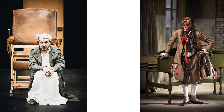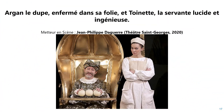Bérald est l'incarnation de l'honnête homme : juste, mesuré, sincère, équilibré. Alors qu'Argan est un fou, hypochondriaque, fanatique de la médecine, injuste avec sa fille, dupe et déséquilibré. L'un, Bérald, est raisonnable et rationnel, tandis que l'autre, Argan, est fou et irrationnel. On retrouve un autre couple antithétique avec le couple du maître et de la servante. Alors que le maître, Argan, est dupe et enfermé dans sa folie, Toinette, la servante, est ingénieuse et fait preuve de courage et de lucidité.